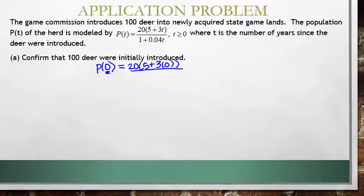Substituting in 0 for t, we get 20 times 5 all over 1, which is 100. So that does confirm that when t is 0, we get 100 deer initially.